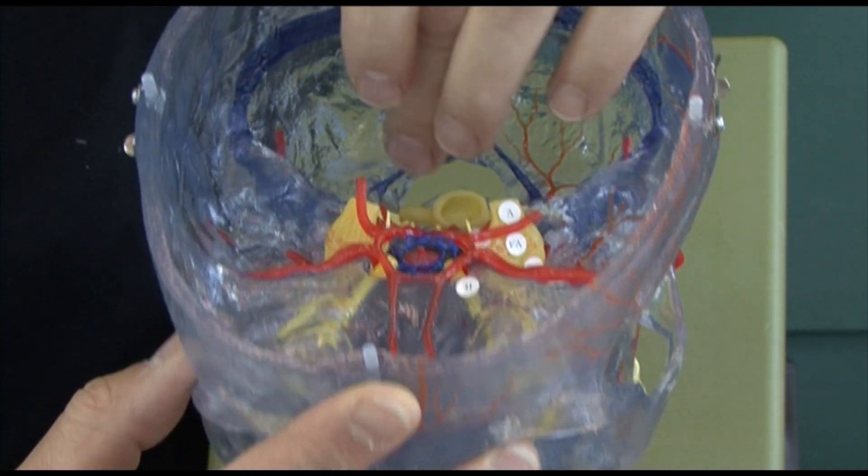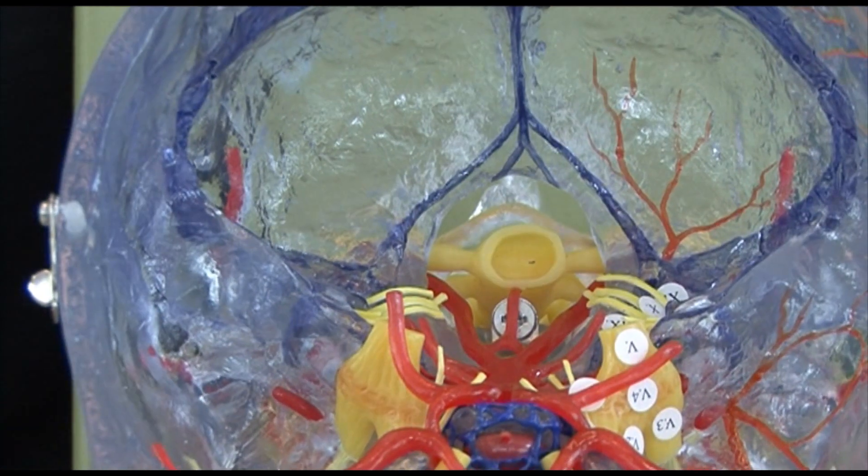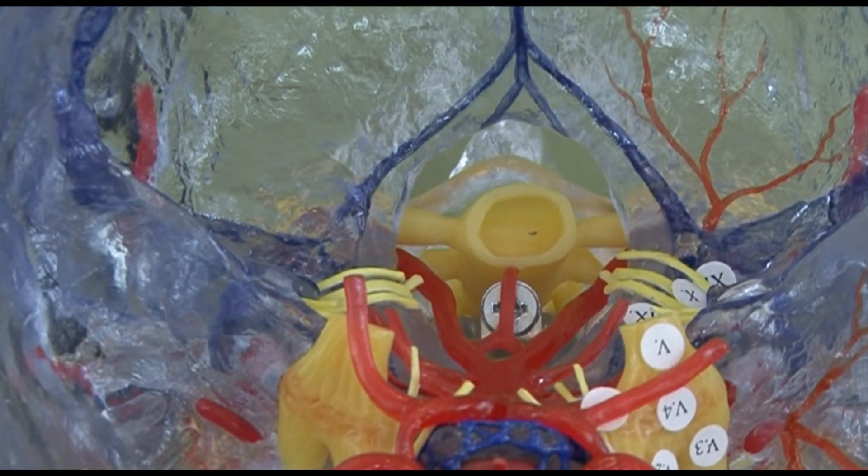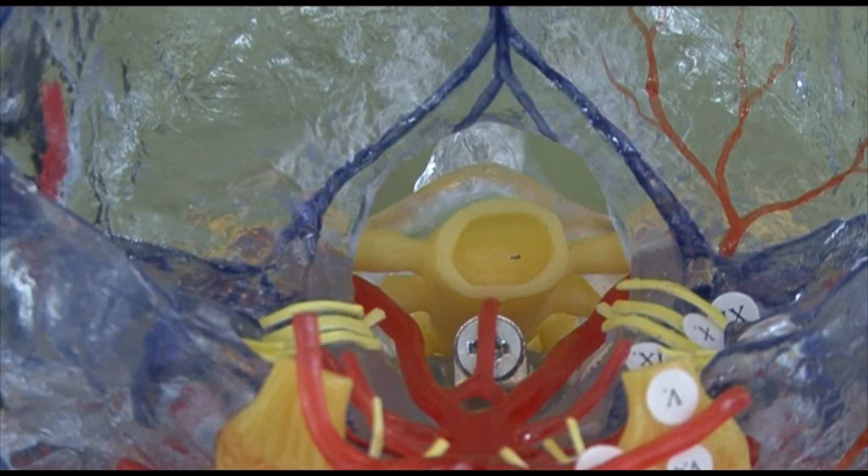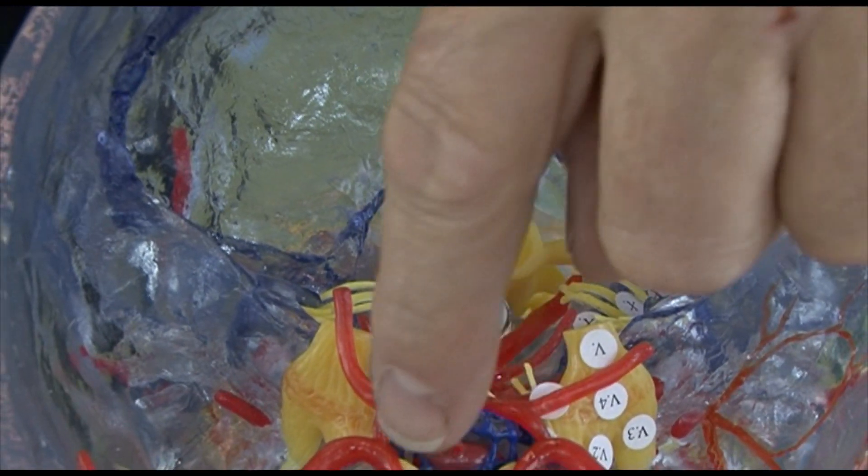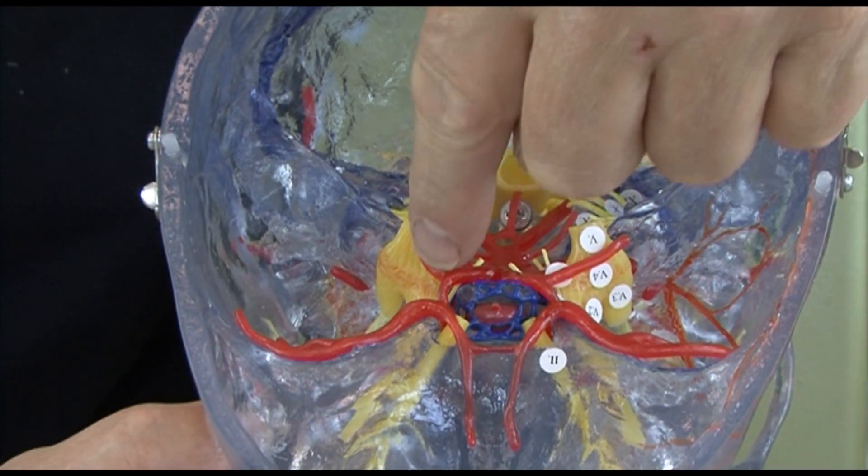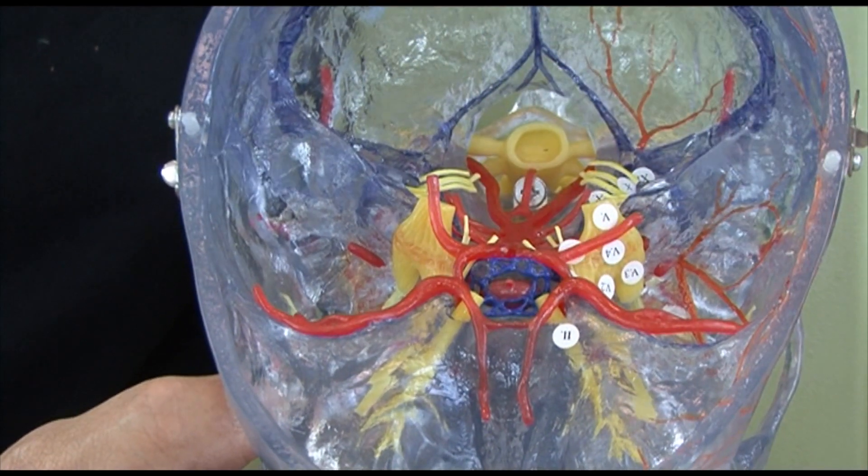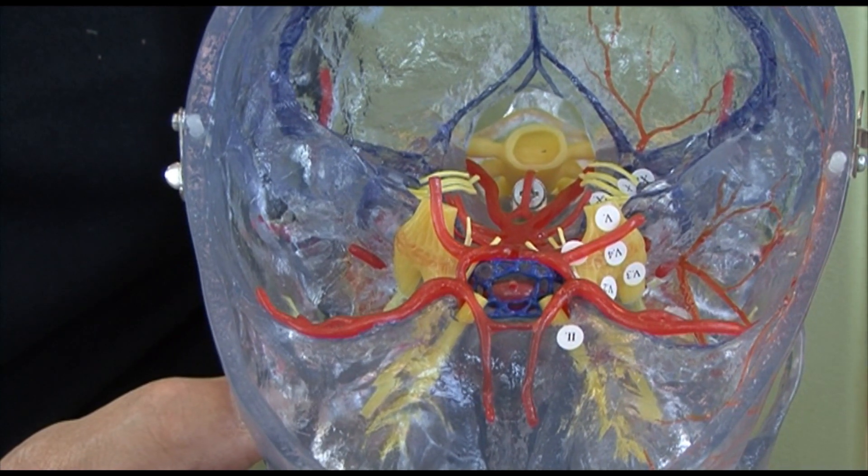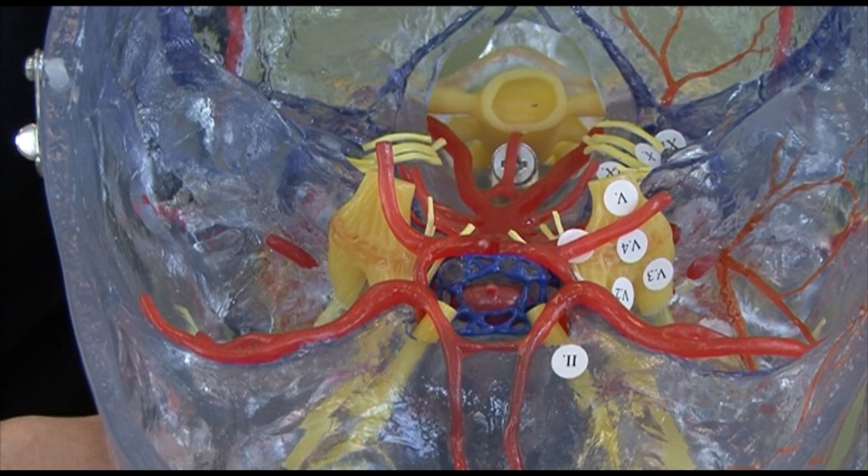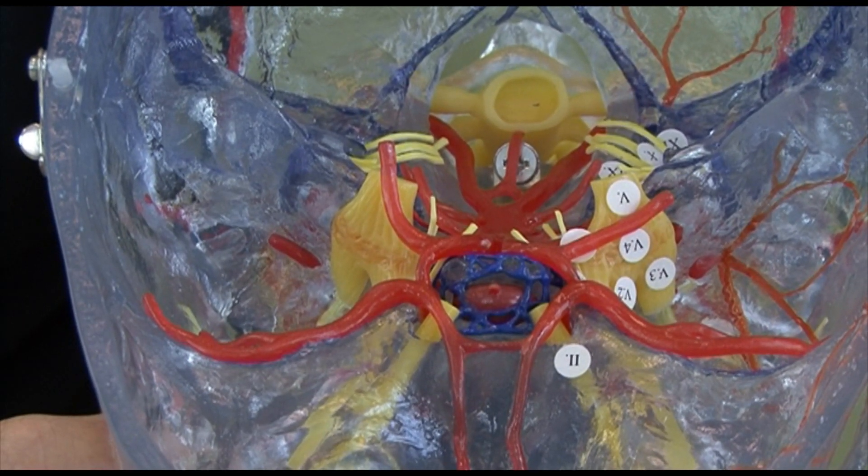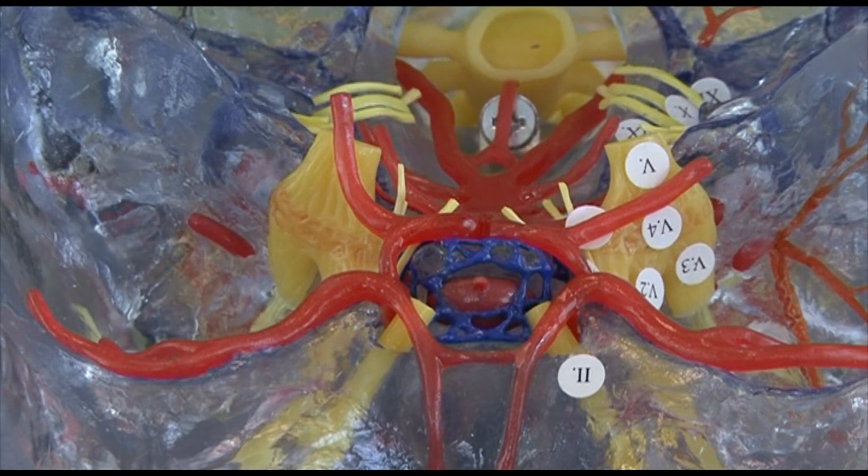And here in yellow we have the top of the spinal cord going through the hole in the base of the skull called the foramen magnum. We can see here there's actually a circle of arteries at the base of the brain - this is called the circle of Willis and it provides a degree of collateral circulation to the brain.